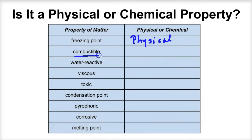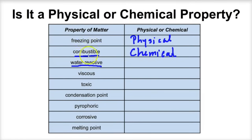If something is combustible, that's going to be a chemical change. If we said that oxygen is combustible, that tells us that oxygen over time is going to change to carbon dioxide and water vapor. If we said that sodium metal is water reactive — which it is; when you throw it in water there's a very violent reaction — it's a chemical change that's taking place. So that water reactivity would be a chemical property of sodium.